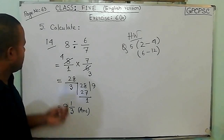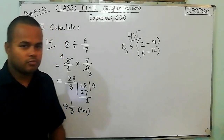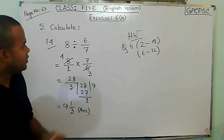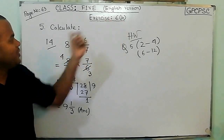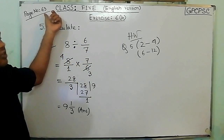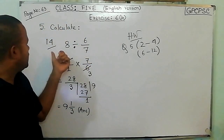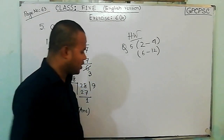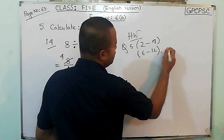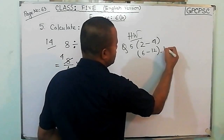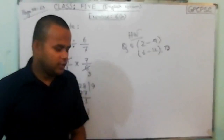You have similar types of problems in your textbook, that is on exercise 6B, page number 63. That is number 30 — so this one also will be your home task, number 30.